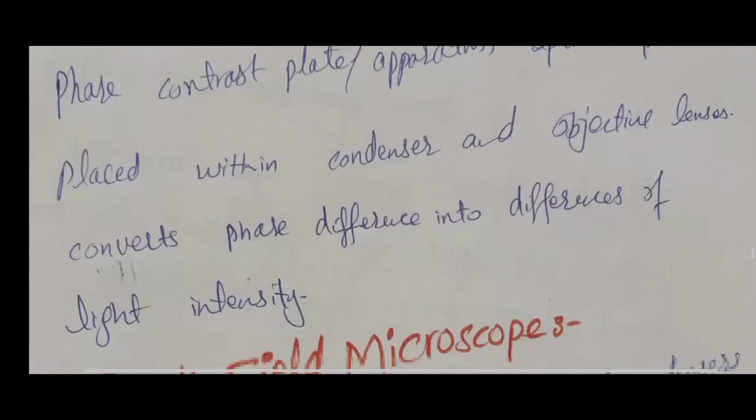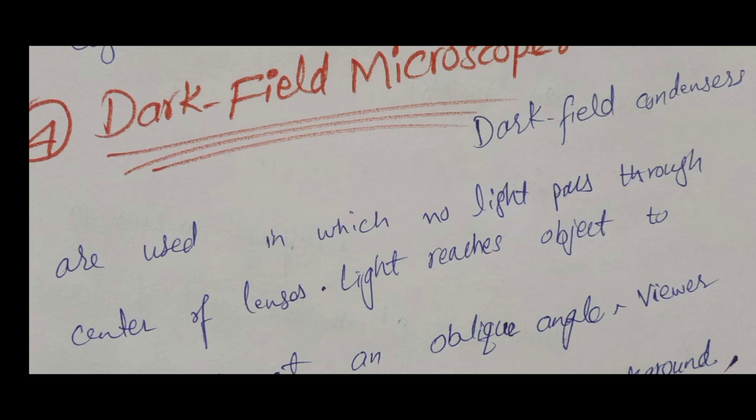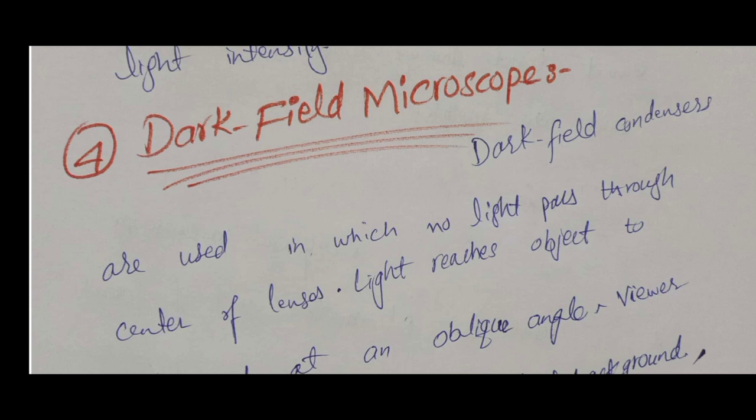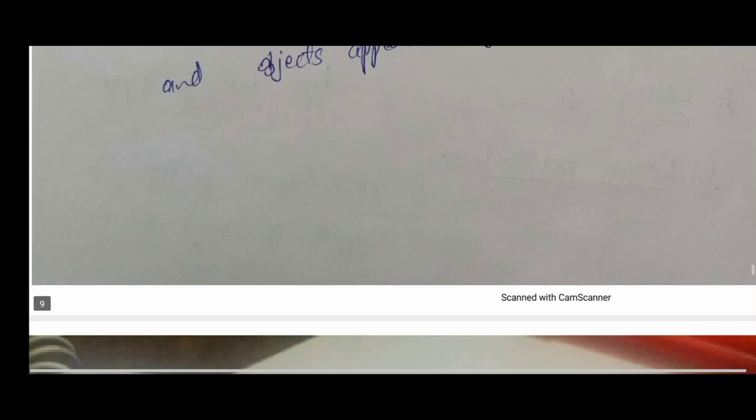The fourth type is the dark field microscope. In this microscope, light cannot pass through the center of the lens but passes through the sides of the lens. As a result, the objects are viewed as bright against a dark background, differentiating the objects from the background.